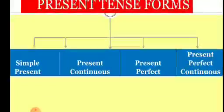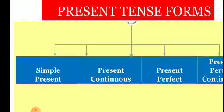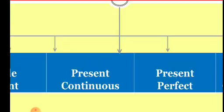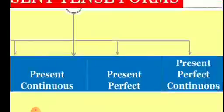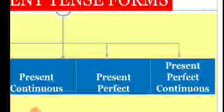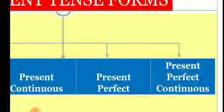Let us know the various aspects of present tense forms. They are: simple present, present continuous, present perfect, and present perfect continuous.